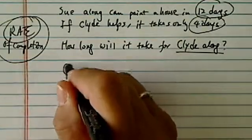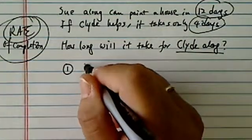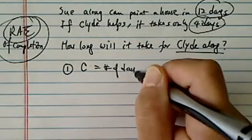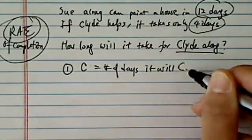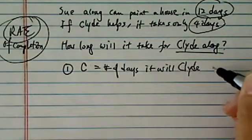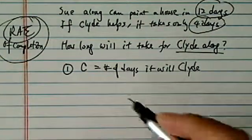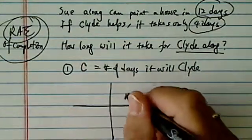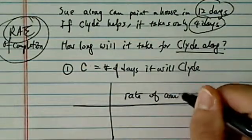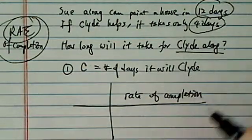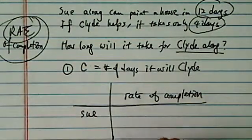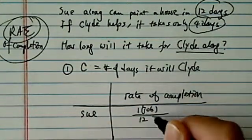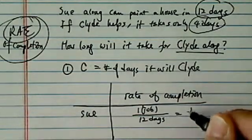The first thing you do is you want to assume you know the answer. Let's assume C is equal to the number of days it will take Clyde to paint. Now the next thing you do is you set up a table — here's the rate of completion. Sue does one job, which is paint the house, in 12 days, so hers is 1 over 12.